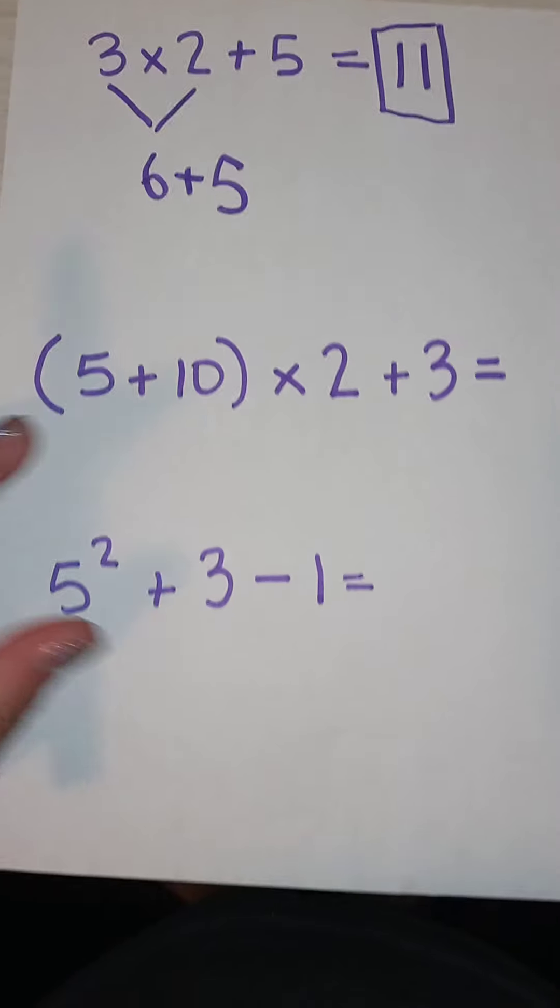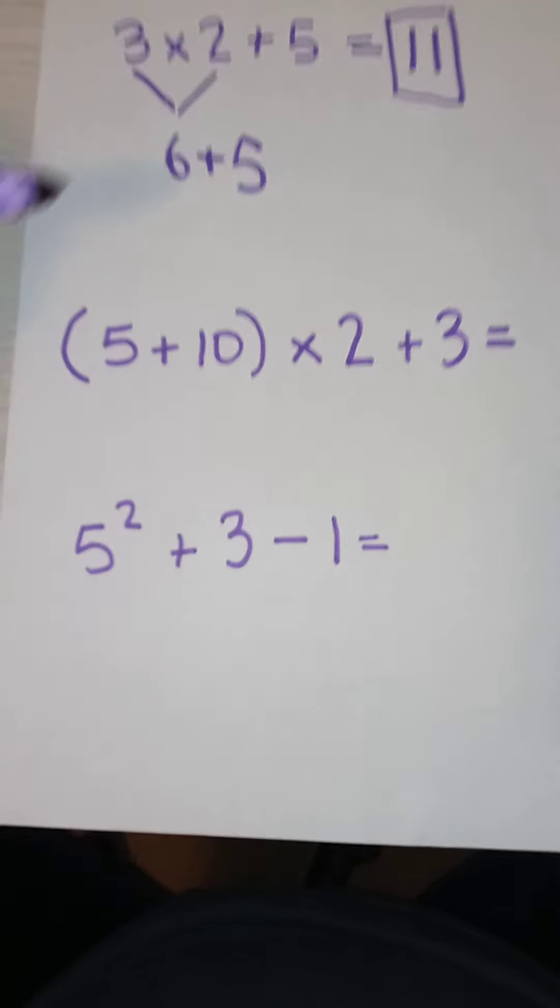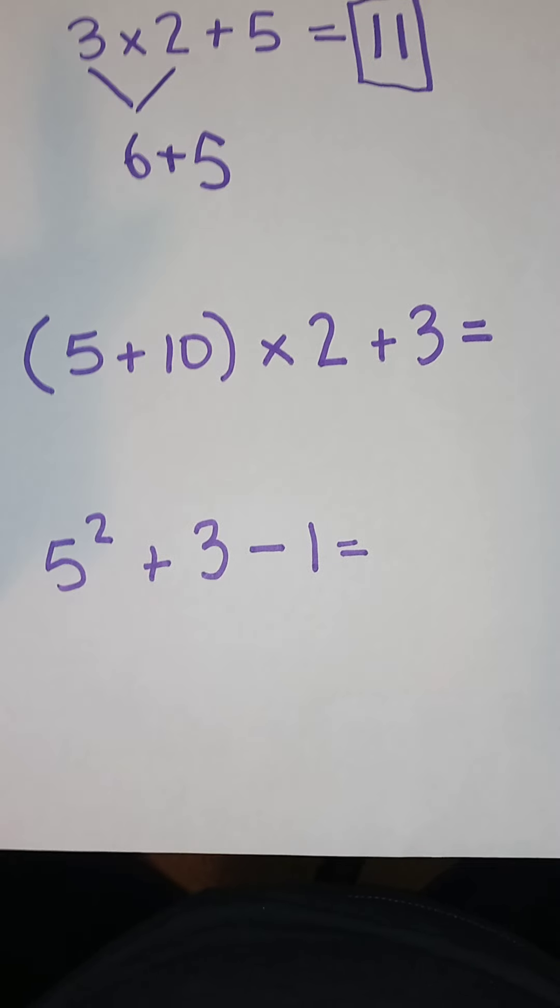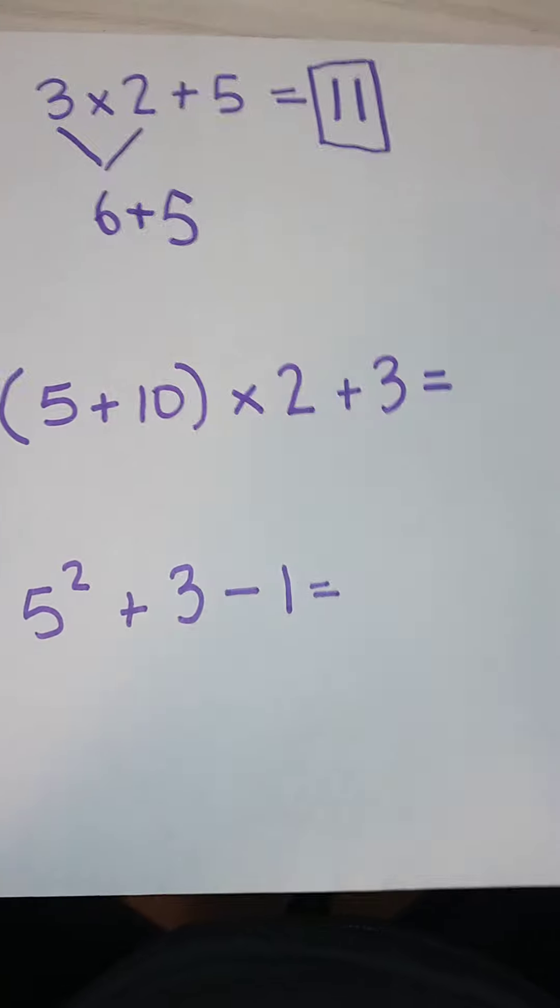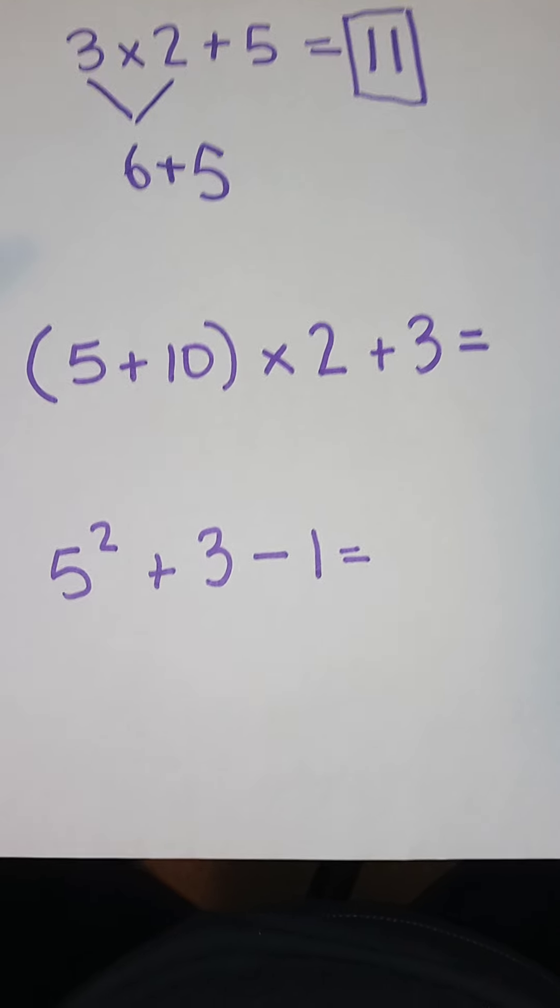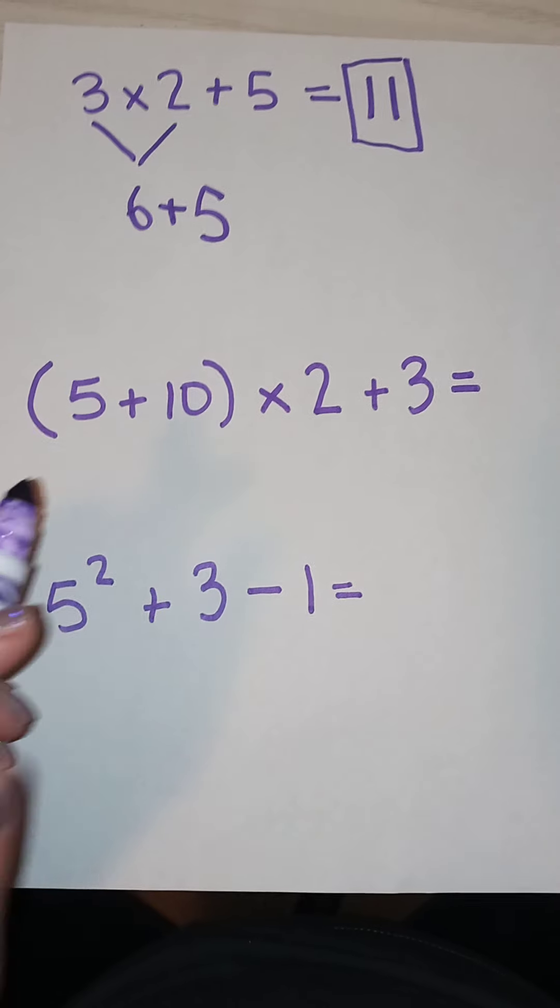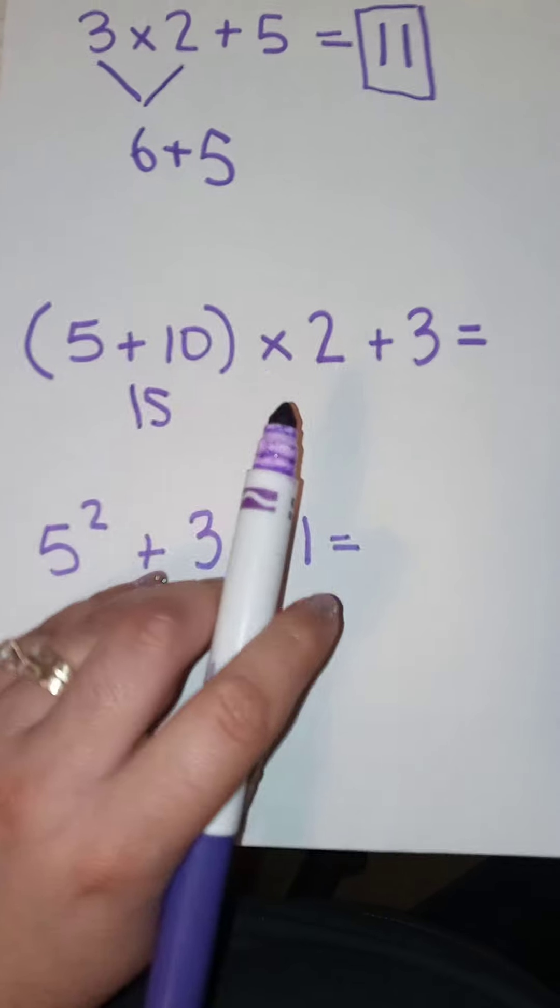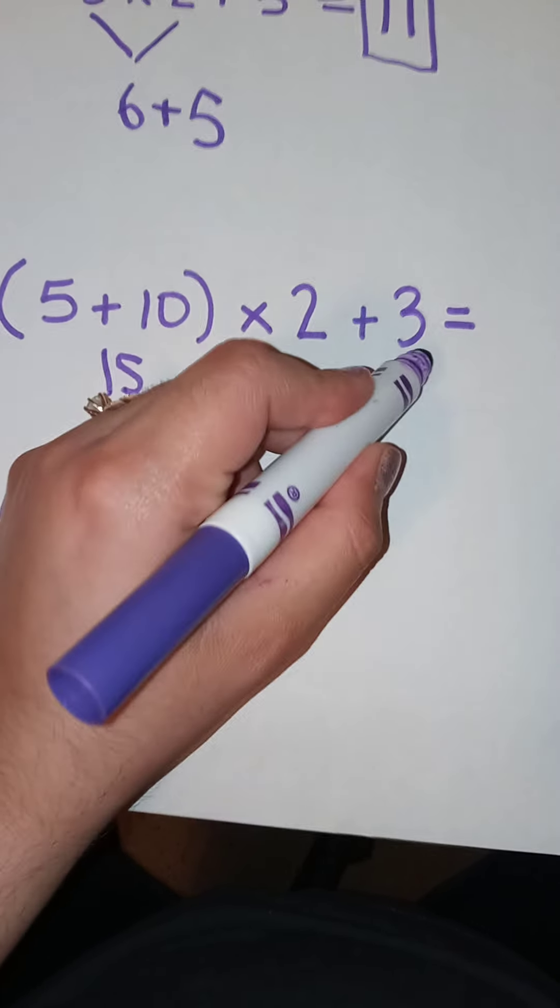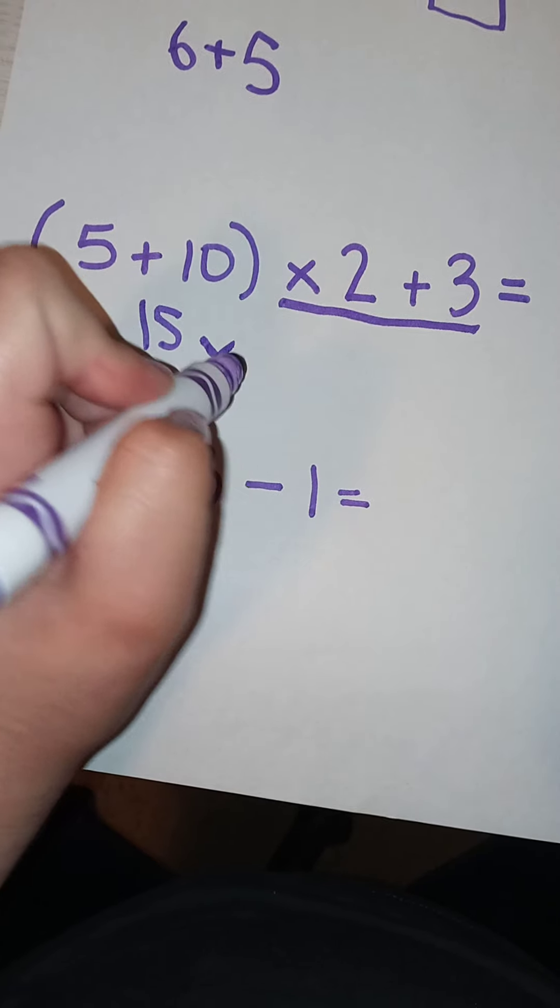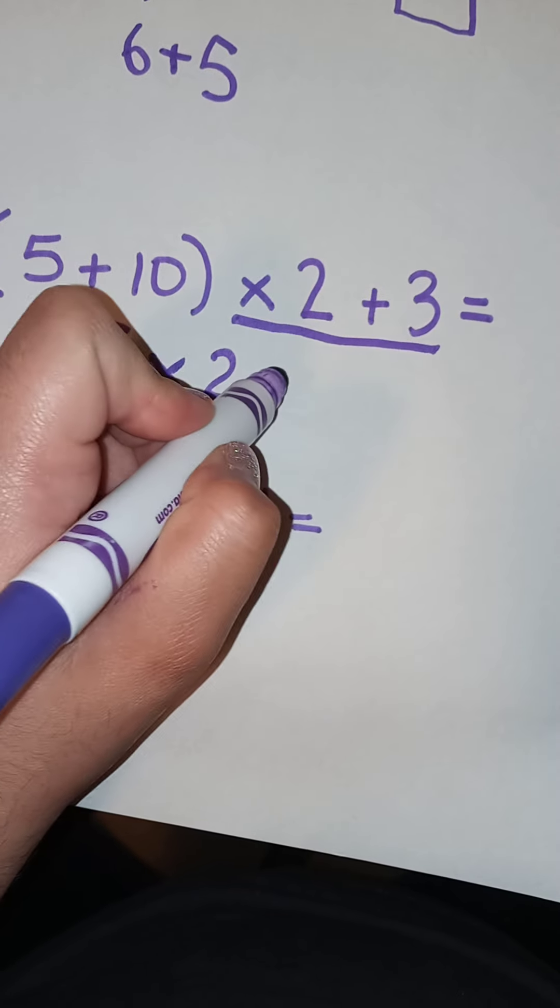Let's do problem number two. Five plus ten times two plus three. Think about it. Parentheses comes first. So, we do five plus ten, which is fifteen. Bring all of this down. So, we have fifteen times two plus three.